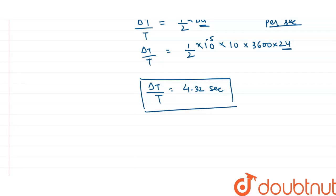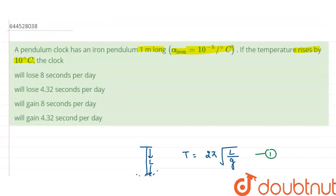After the temperature increases, the length increases, which means the time period increases. When the time period increases, the clock loses time because the pendulum moves more slowly. Therefore, the clock loses 4.32 seconds per day. Check the options — the correct answer is: the clock will lose 4.32 seconds per day.